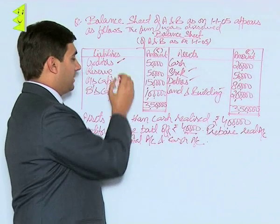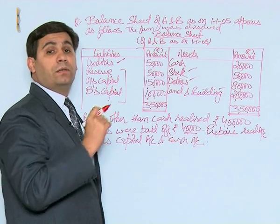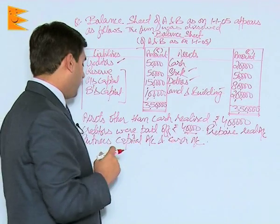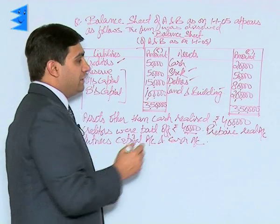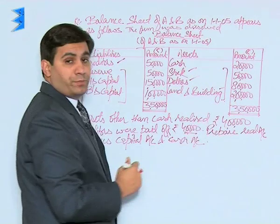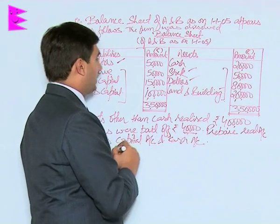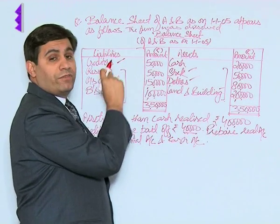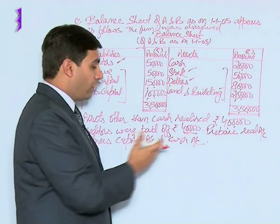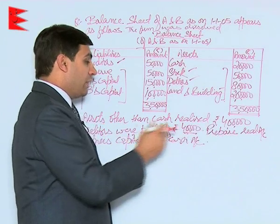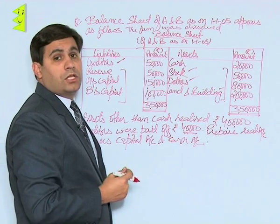Out of these liabilities, only the creditors represent outsiders' liabilities. Reserves and capital accounts represent liability of partners. As per the additional information, assets other than cash realized ₹4 lakh in total. The creditors appeared in the balance sheet at ₹50,000 but were paid off at ₹40,000, meaning they were settled at a discount of ₹10,000.